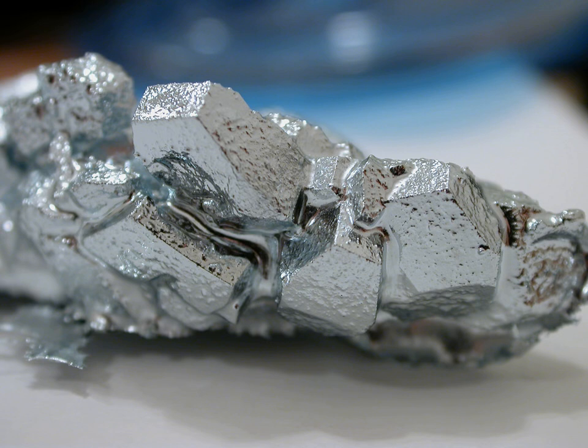Mendeleev further predicted that eka-aluminium would be discovered by means of the spectroscope, and that metallic eka-aluminium would dissolve slowly in both acids and alkalies and would not react with air. He also predicted that M2O3 would dissolve in acids to give MX3 salts, that eka-aluminium salts would form basic salts, that eka-aluminium sulfate should form alums, and that anhydrous MCl3 should have a greater volatility than zinc chloride.